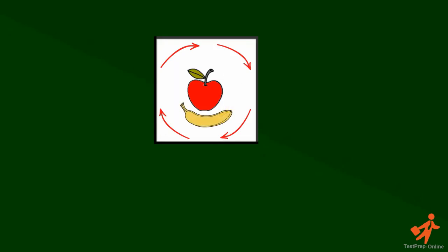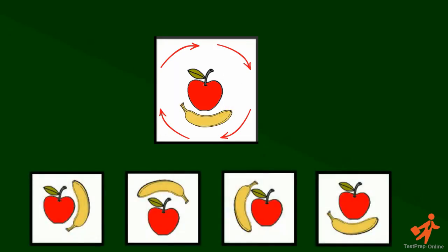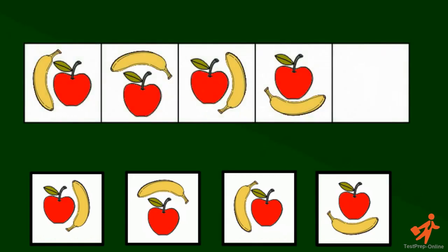So now that we've found the pattern we need to find the right answer choice. The question we need to ask ourselves is, where should the banana be in the last box if it continues its movement around the apple?